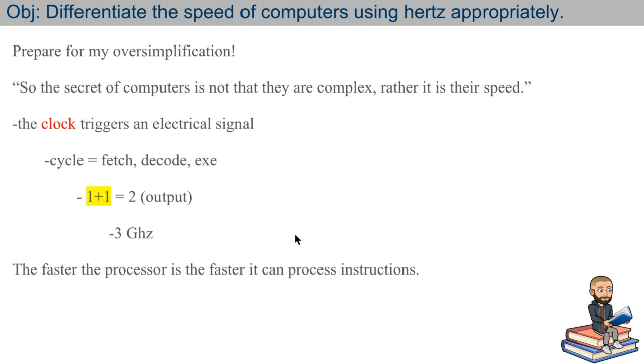So let's finalize the lesson with just my oversimplification. Again, the secret of computers is not that they're complex, but they're very fast. So what happens is the clock triggers an electrical signal, and this signal allows a cycle to occur, it's going to fetch, decode, and execute an instruction. So my example is if I wanted to add 1 plus 1 and get 2 as an output, essentially I could do this 3 billion times using a 3 GHz computer. The faster the processor is, the faster it can process instructions.